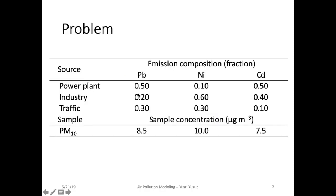Let's take a look at some data we can use with the receptor model equation. In the left column, we see three different types of sources: the power plant, industry, and traffic. The three right columns show us the emission composition or fraction of the three elements — lead, nickel, and cadmium. 0.50 means 50% of lead comes from the power plant, 20% from the industry, and 30% from the traffic. For nickel, 10% comes from the power plant, 60% from the industry, and 30% from the traffic, and so on for cadmium.